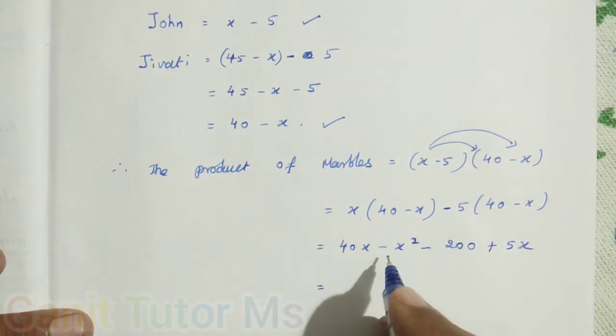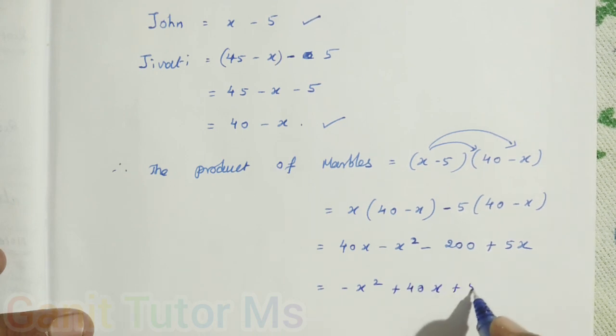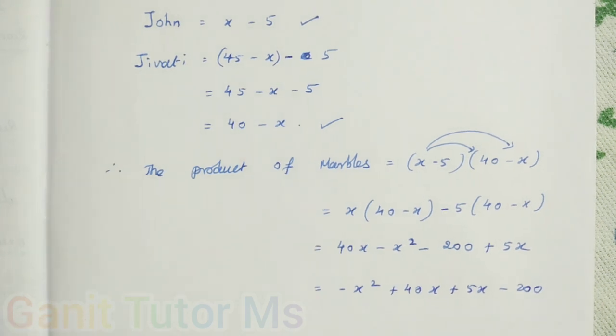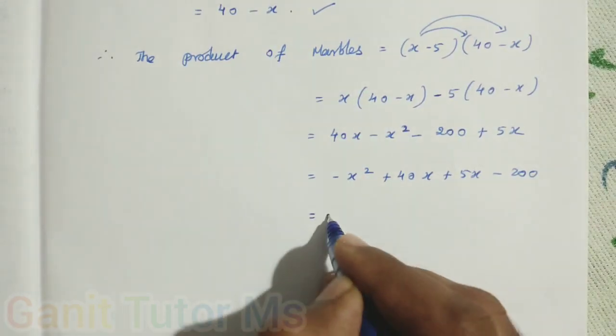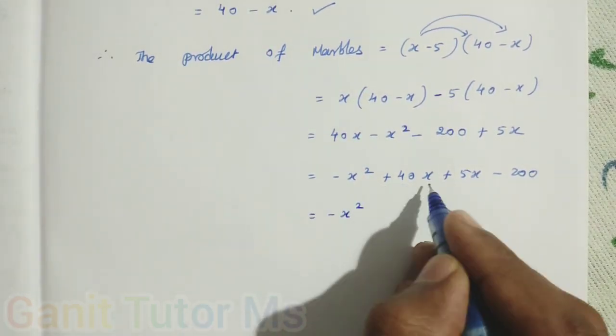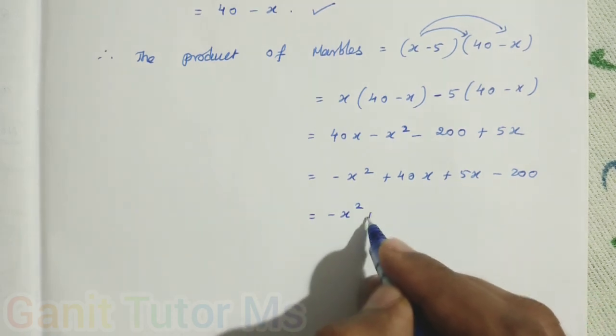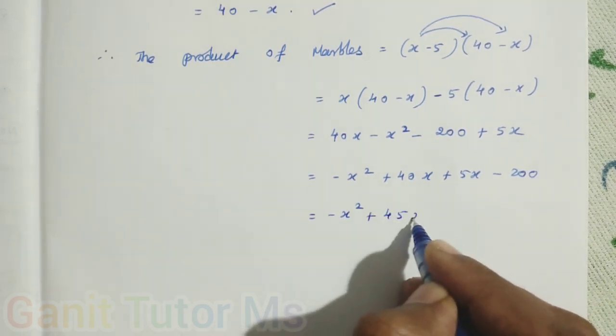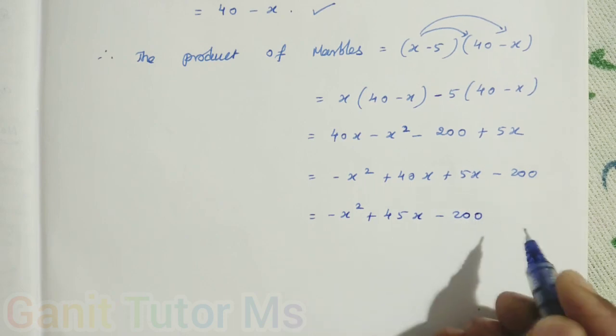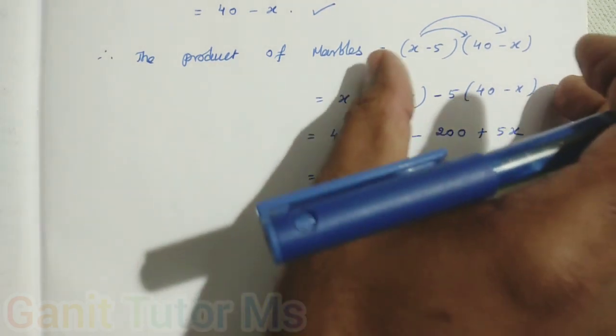Then you can solve the variables first. So what is the highest variable here now? Minus x squared. Then plus 40x, then plus 5x minus 200. Now we can solve it: minus x squared plus 40x plus 5x is 45x minus 200. Now we simplify this side.